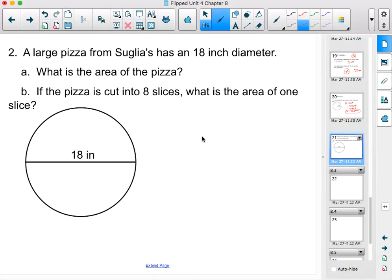Number two, a large pizza from Suglia's has an 18-inch diameter. We are asked, what is the area of the pizza? That's our first question we're going to answer. We've got our circle here with a diameter drawn. Diameter is what's given, but remember, in an area formula, in an area problem, we have to know the radius.